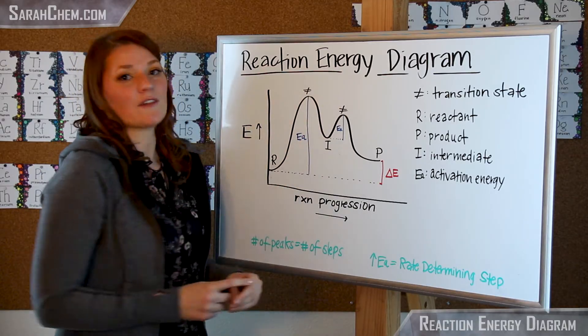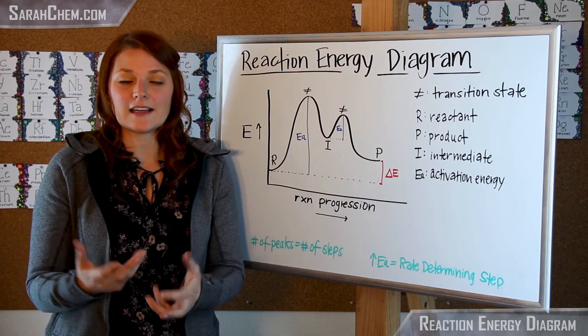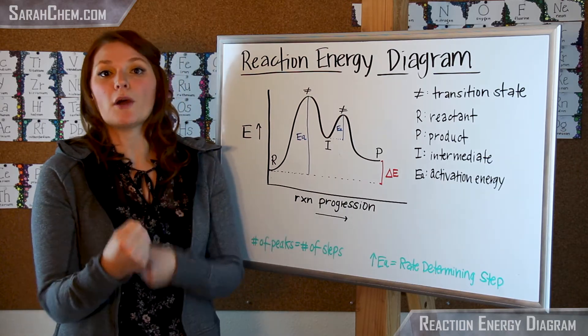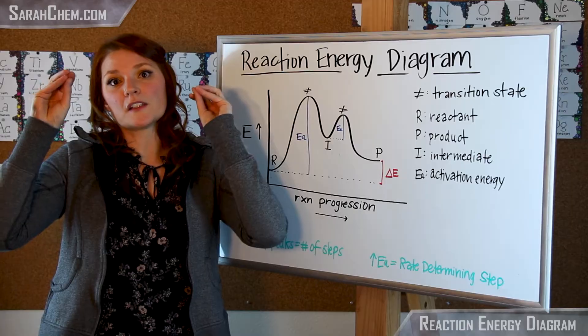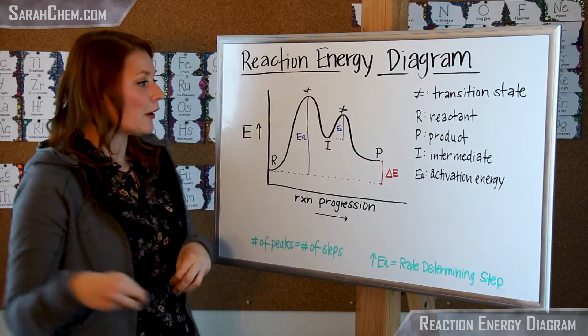At the top of each of these peaks we have a transition state. The transition state is something that cannot be isolated, it's got bonds that are partially formed and partially broken, and these are the species right before they transition from the identity of the reactant to the product.